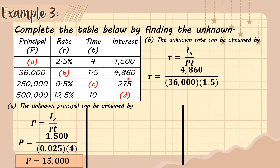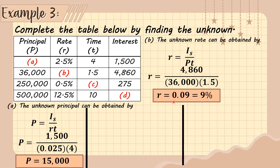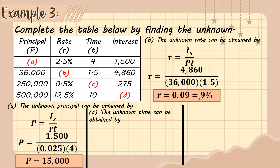Substituting: r = 4,860 ÷ (36,000 × 1.5). This gives 0.09, or 9 percent. So letter B is 9 percent.